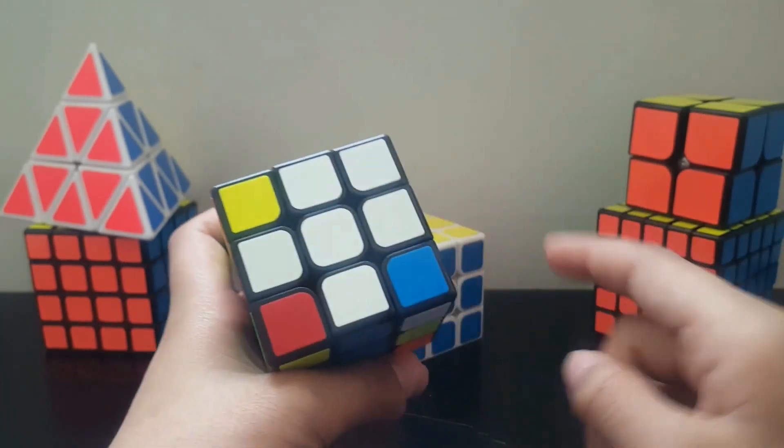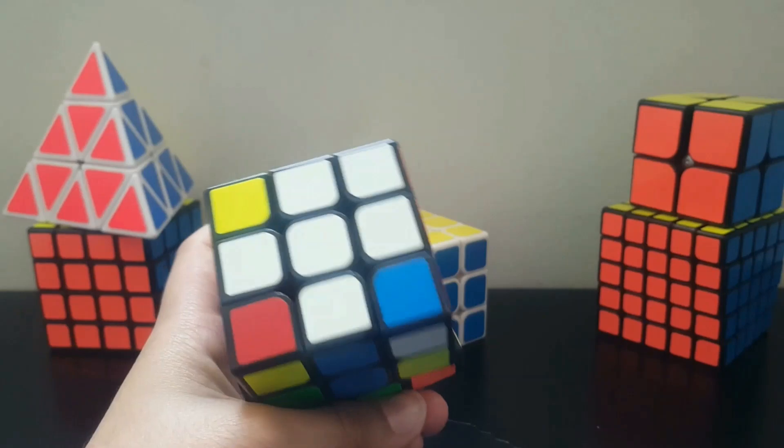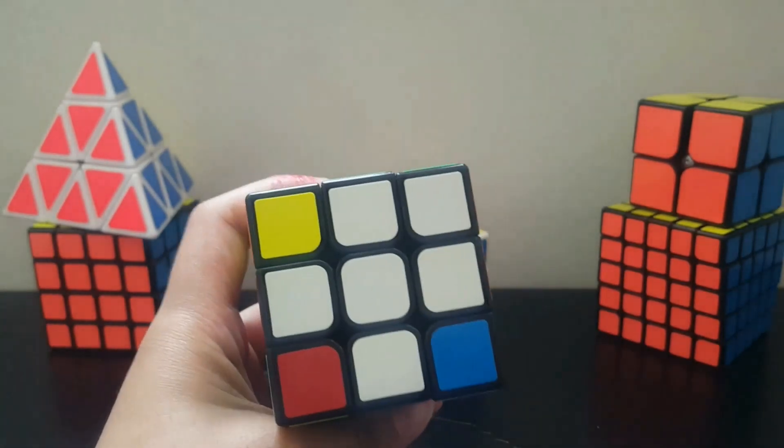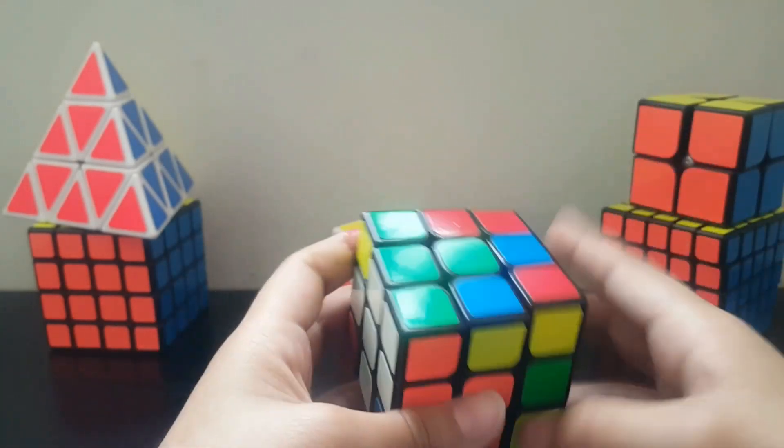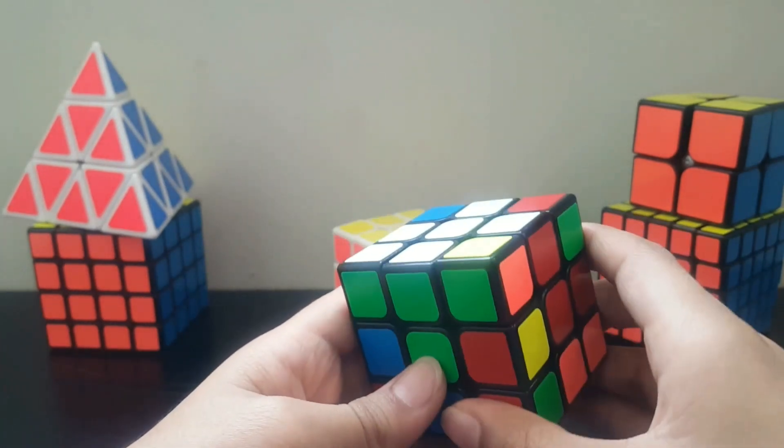Now we have to bring it to a plus sign. So after we have done it with the edge pieces, next is the corner pieces. So in the corner pieces, we have to find the same colors one.